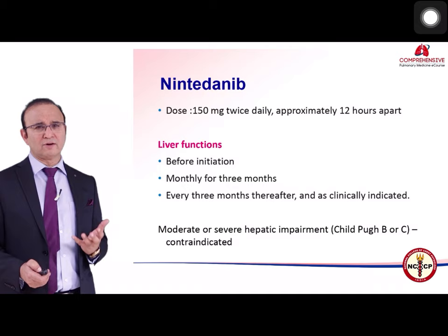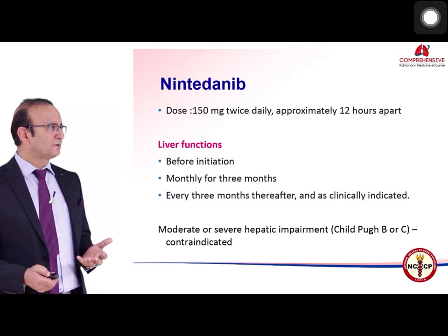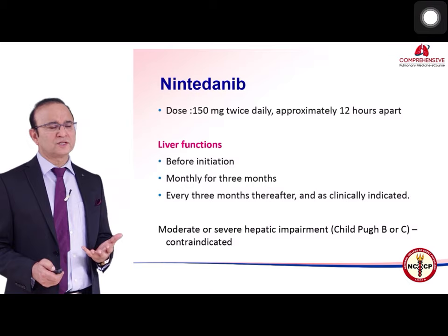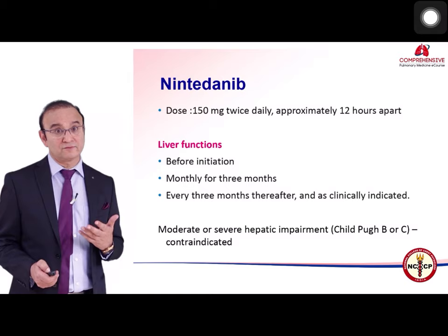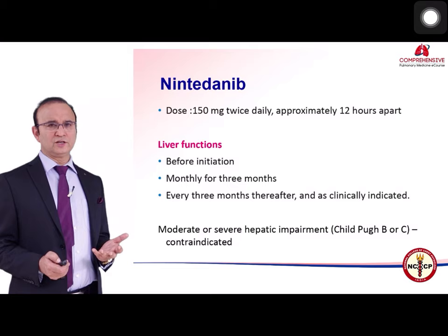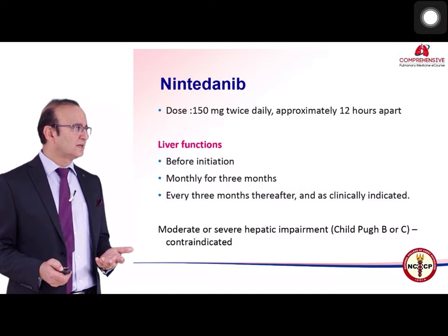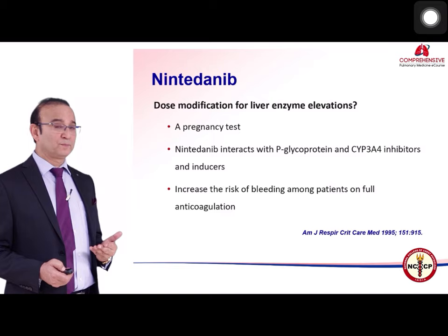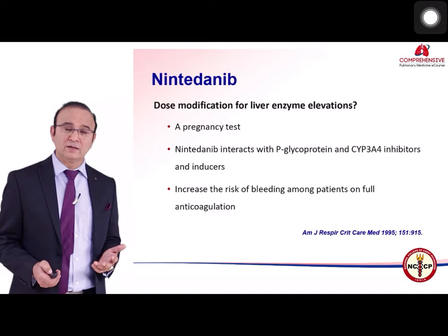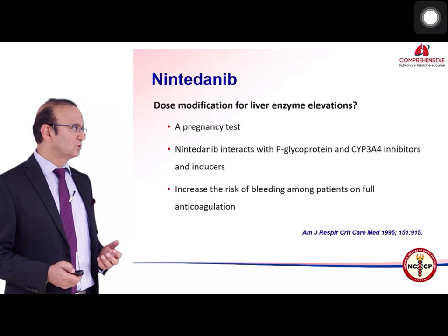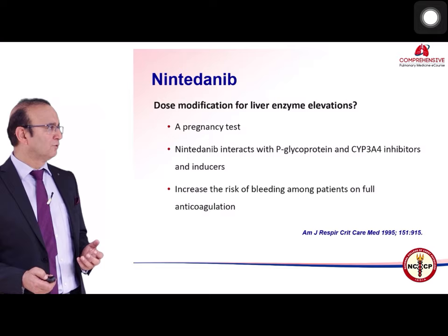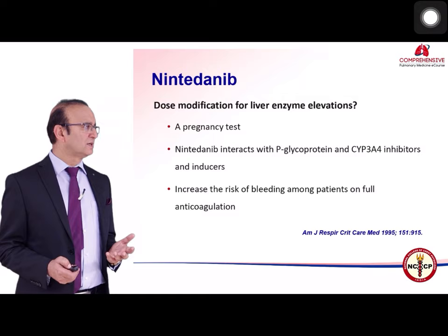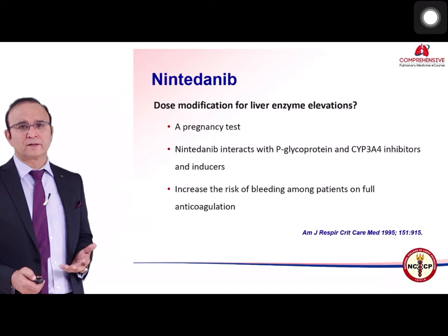Nintedanib dosing is 150 mg twice daily, approximately 12 hours apart with meals. LFT should be assessed prior to initiation. Patients with moderate-to-severe hepatic impairment (Child-Pugh B or C) should not take nintedanib. After initiation, LFT should be repeated monthly for three months and every three months thereafter. A pregnancy test should be performed prior to initiation in women of childbearing age, and conception should be avoided until at least three months after the last dose. Nintedanib interacts with CYP3A4 and P-glycoprotein and may increase bleeding risk in patients on full anticoagulation.